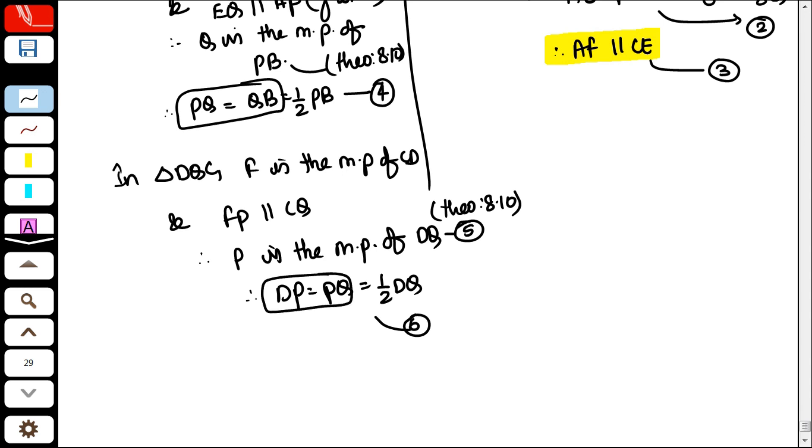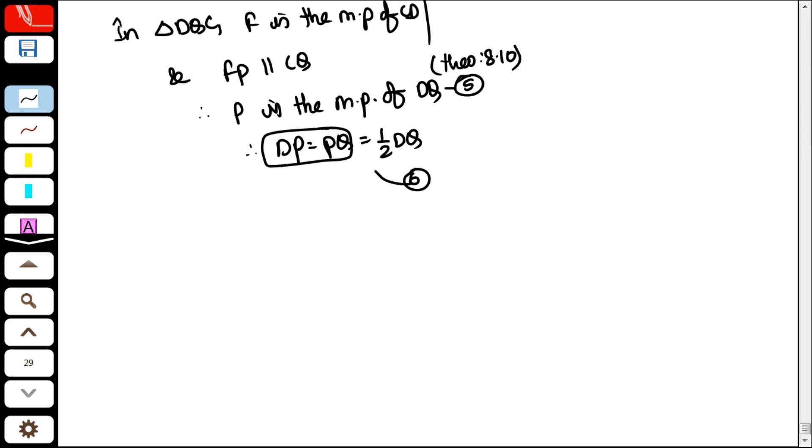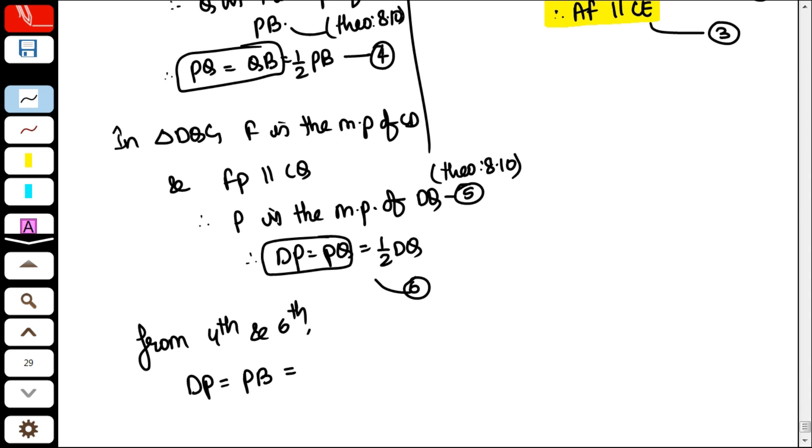Now look. PQ is equal to BQ, and PQ is equal to DP. OK? From point 4 and 6. From fourth and sixth. DP is equal to PB. What is it? PQ is equal to QB.